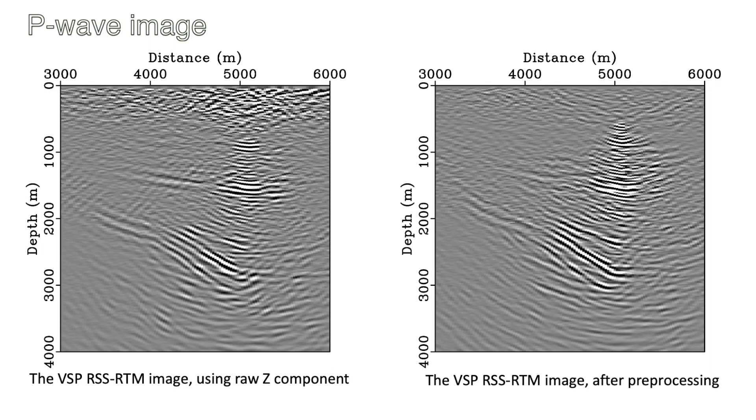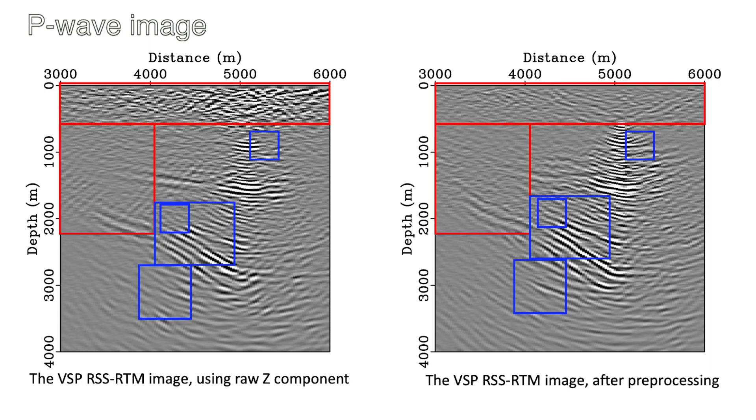To evaluate the value of the preprocessing effort, we also image the raw Z component. The image from the raw Z component is shown on the left. After wave field separations, a considerable amount of the noise has been reduced and more complete and coherent structures have been revealed by careful preprocessing. The down-going wave field and the shear wave removal contribute to a lower noise level in general. The redistributed P wave energy from all three components give rise to a more detailed and complete P image.